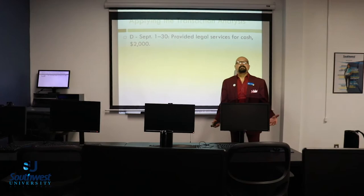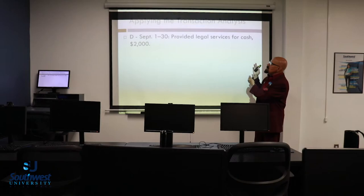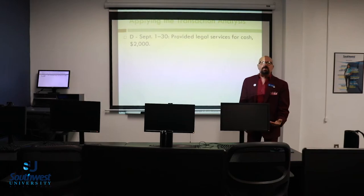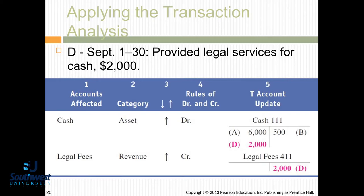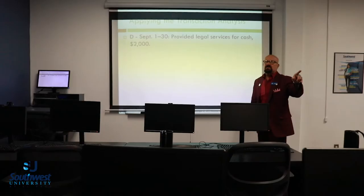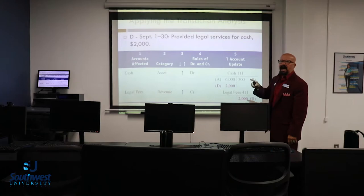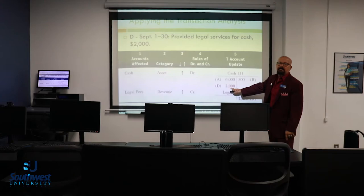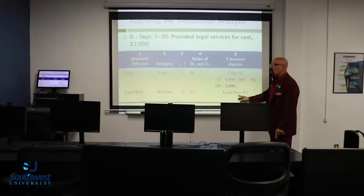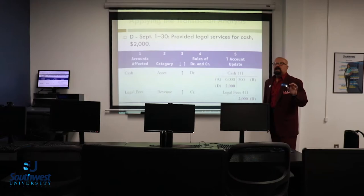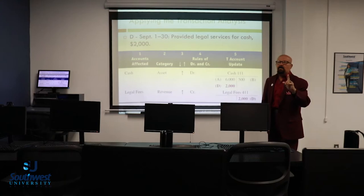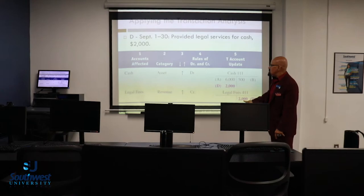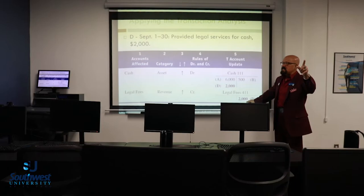Provided legal services for cash, $2,000. Mia is a lawyer, so when she provides legal services, that's revenue. Cash is an asset — how do we make an asset go up? We debit it $2,000. We have a new account called legal fees. Anytime you see the word 'fees,' that means revenue — how do we make a revenue account go up? We credit it $2,000. We have $2,000 on the left side and $2,000 on the right side — we balance.